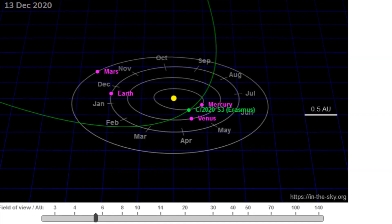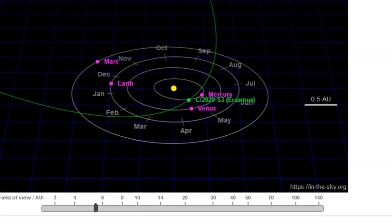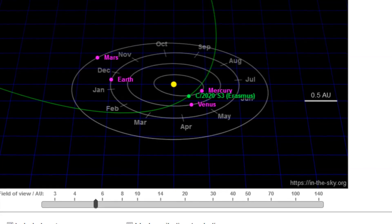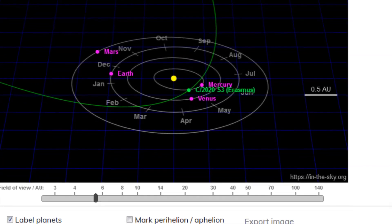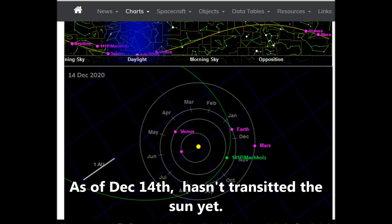But Macholz, no matter how you slice it, no two diagrams are agreeing. The written calculations, they're all disagreeing because there's been a change in its orbit. And it's been affected by the flyby of Planet X. As of December 14th, it hasn't even transited the sun yet. It should not be visible in Soho. So the comet that we see flying through the field of vision in Soho is neither Erasmus, Erasmus, did I say that right? Or Macholz 2.